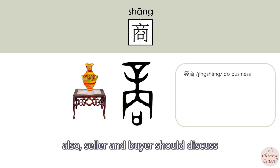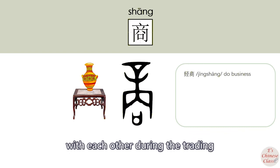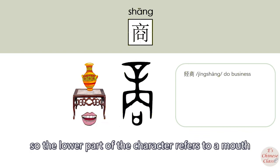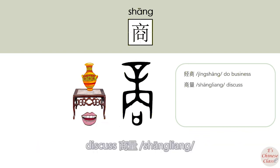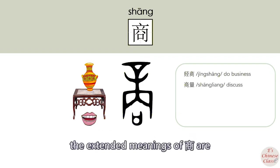Also, the seller and buyer should discuss with each other during trading, so the lower part of the character refers to a mouth, which indicates 'discuss'. The extended meaning of 商 includes 商量 (discuss).